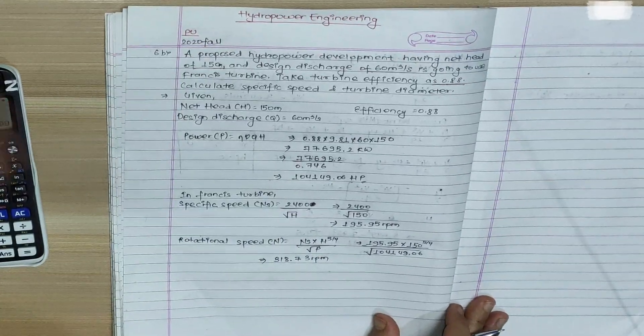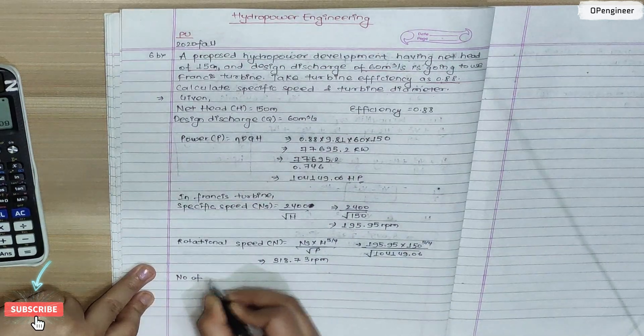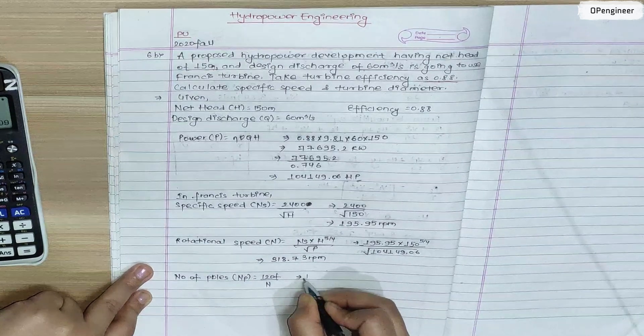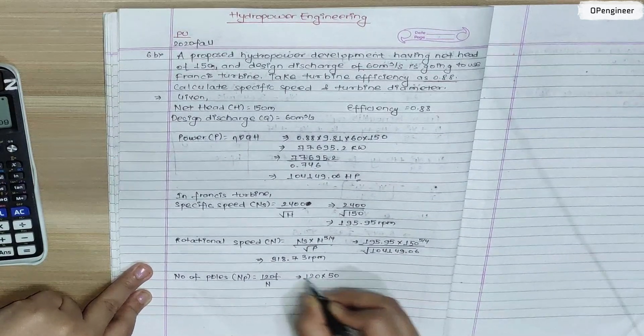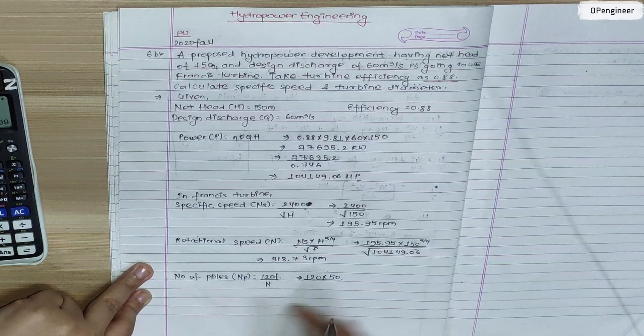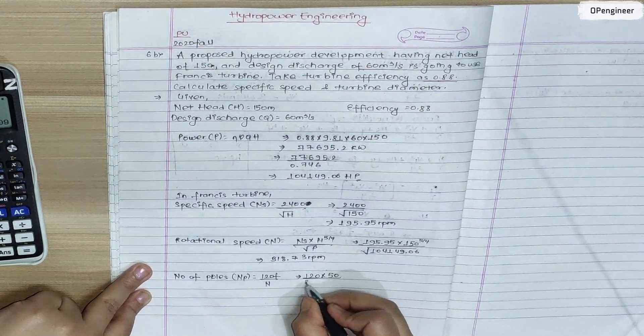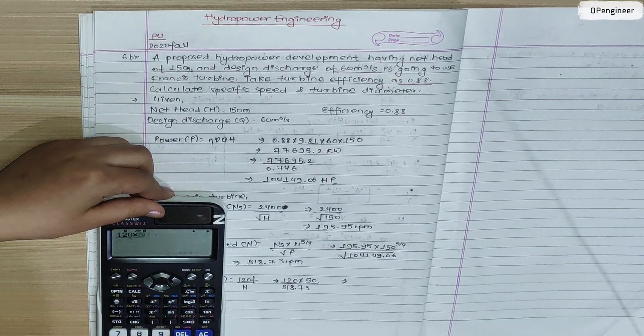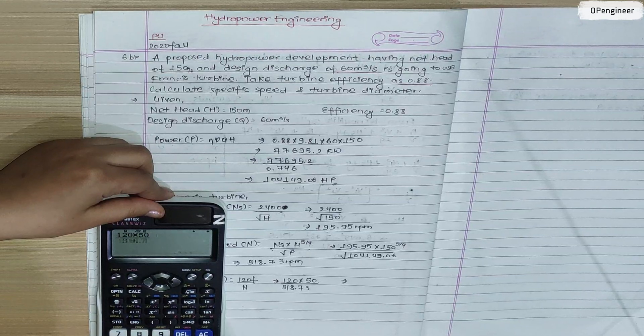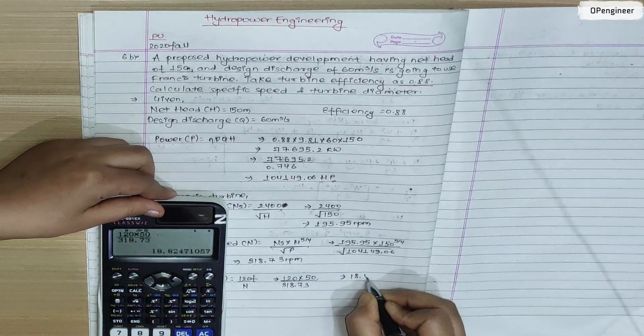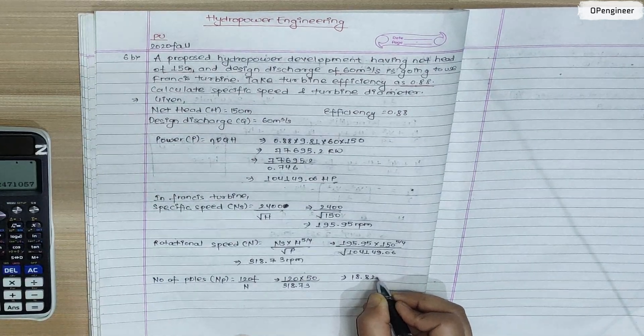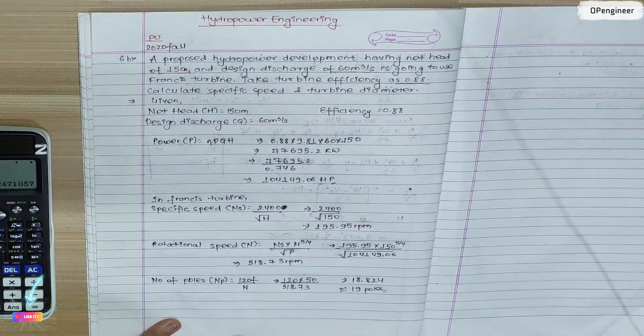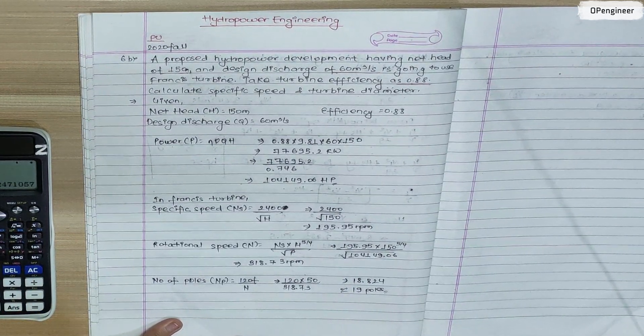Calculate number of poles. It's 120 by N. So 120 into frequency divided by rotational speed 318.73. Calculate 120 into 50 by 318.73 equals 18.824 poles. Number of poles is nearly close to 19 poles.